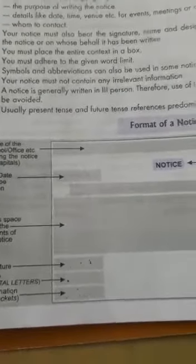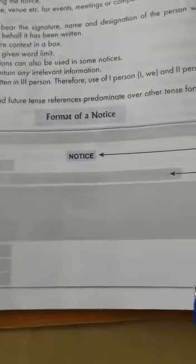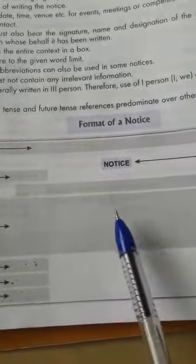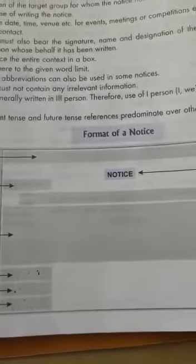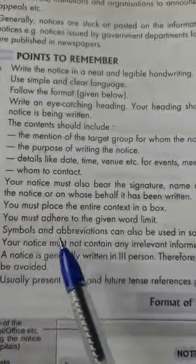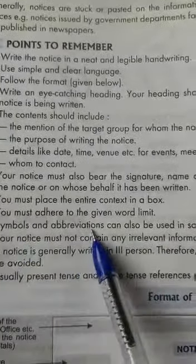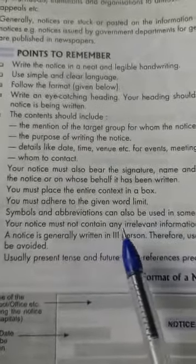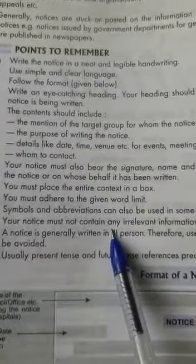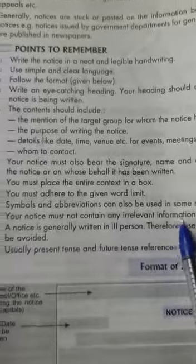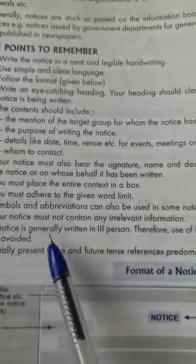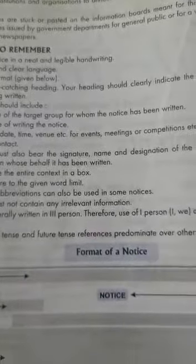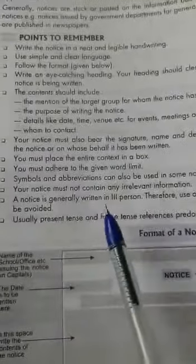Last but not the least, don't forget to put the notice in a box — it is mandatory. We can also use symbols and abbreviations (short forms) where necessary. No irrelevant information should be included, as the notice is written in a formal style. One more important point: a notice is generally written in the third person — he, she, it, and they. Avoid using first person or second person; avoid using I, we, and you.